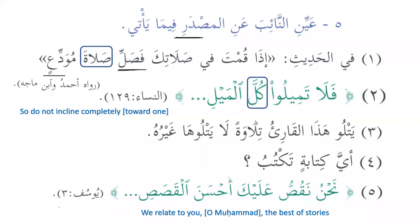Here we have kulla, which can be seen to be used as naib anil masdar. From the beginning of the lesson we have seen that the masdar has deputies — around eight deputies. Ismul masdar like wudu'un and salatun can be used as the deputy of the masdar, and similarly kulla can be used as the deputy of the masdar.